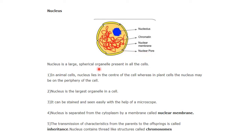The nucleus is large, spherical, and present in all cells. In animal cells, the nucleus lies in the center of the cell, whereas in plant cells, the nucleus may be on the periphery of the cell. The nucleus is the largest organelle in a cell — the largest in size — and it can be stained and easily observed under the microscope. The nucleus is separated from the cytoplasm by a membrane called the nuclear membrane.